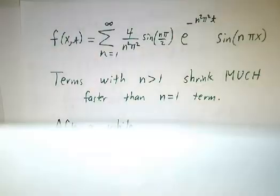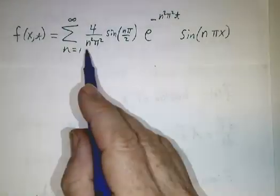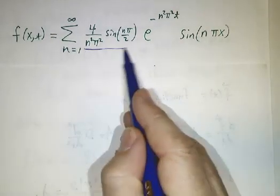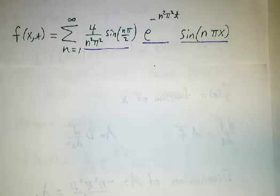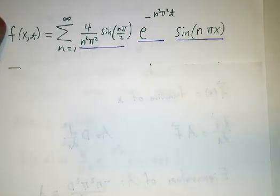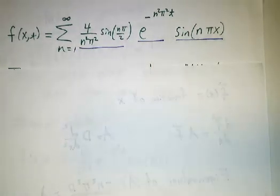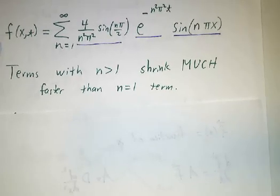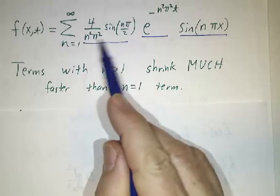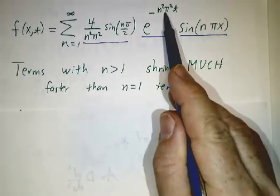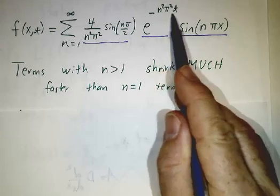And so we get that our function over time is given by this expression. It's the coefficient times the exponential times the function. Now, if you look at how this behaves, the term where n equals one decays the slowest, and all the other terms shrink way faster than the n equals one term. There is no n equals two term because the coefficient is zero. And the n equals three term has an eigenvalue that's nine times as big as the n equals one term. So it decays nine times faster.